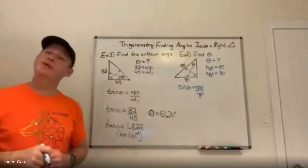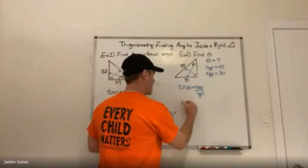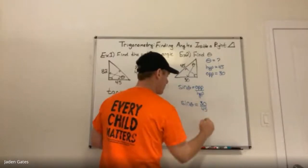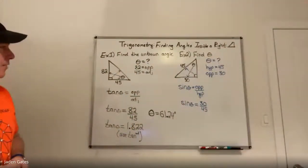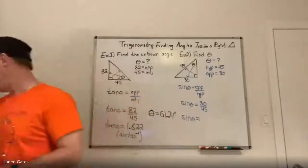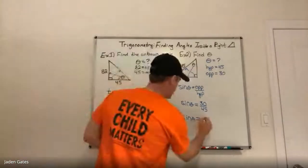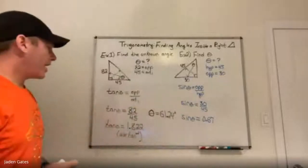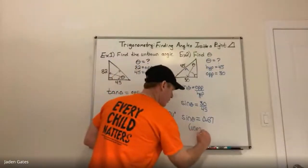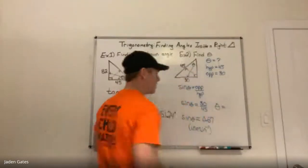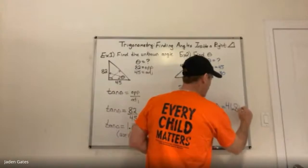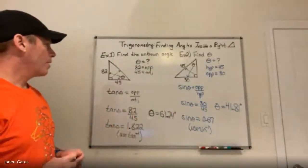Step three: substitute in. Sine theta equals 30 on the top — that's my opposite — divided by 45. So 30 divided by 45 is about 0.67, which is two-thirds. Now I have the sine ratio but I want the angle, so I use sine inverse. Typing that into the calculator in degree mode gives me 41.81 degrees.